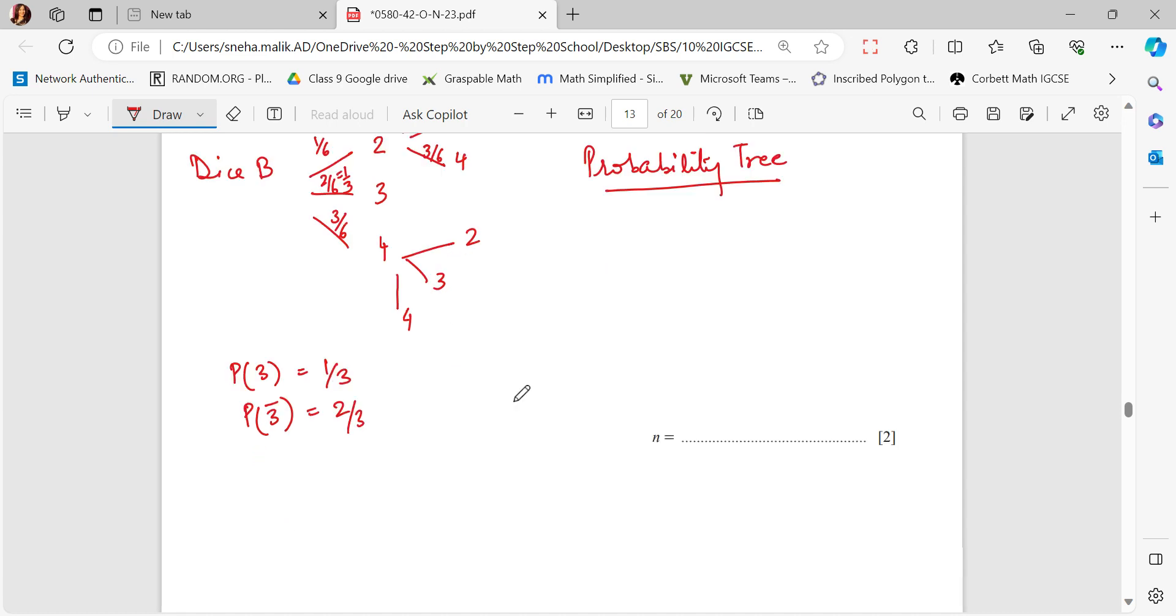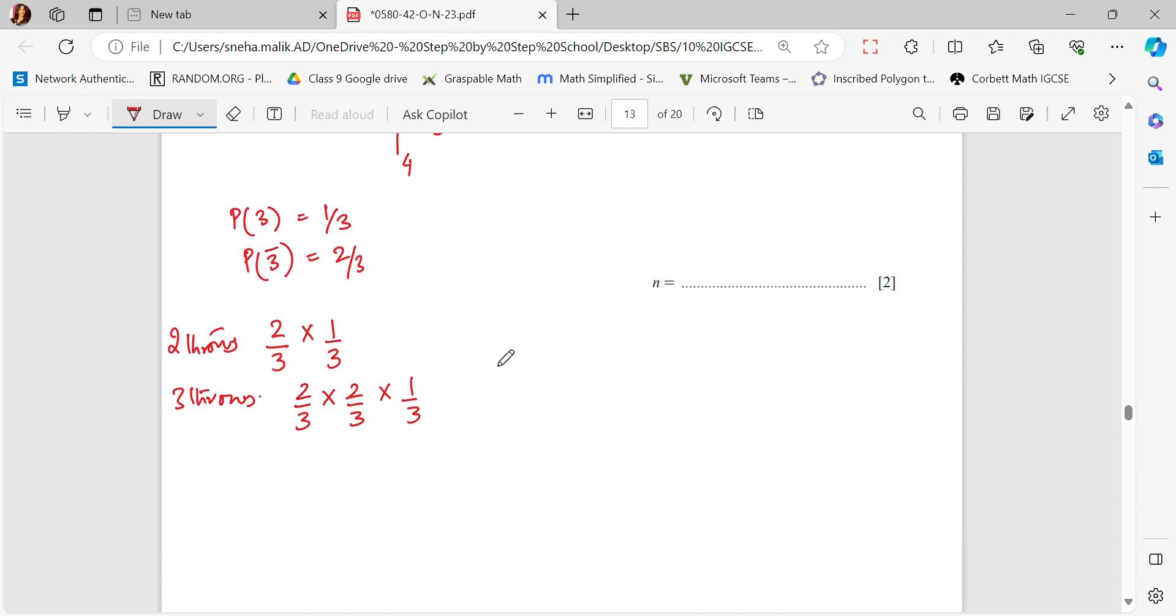If the probability of 3 is 1 by 3, that means the probability of not coming 3 is 2 by 3. On the first roll, I am getting a probability that 3 did not come and then maybe a 3 came on the second throw. Within 2 throws, 3 has come. But if it happens in 3 throws, under 3 throws, 3 did not come, 3 did not come, but 3 came and hence we stopped. Under 4 throws, 3 did not come, did not come, did not come, but on the fourth throw it came.